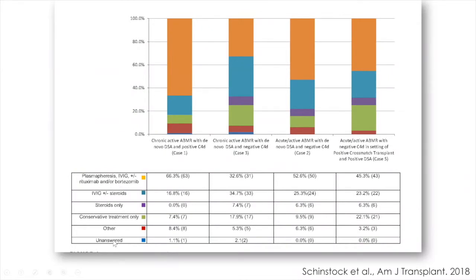These diagnoses also demonstrated implications with regards to choice of therapy. The treatment approaches were heterogeneous but largely linked to the assigned diagnosis. When acute or active antibody-mediated rejection was diagnosed by the clinician, treatment was recommended 95.3% of the time, whereas only 77.7% of the time was treatment recommended in the context of chronic lesions. The survey allows us to conclude that the Banff antibody-mediated rejection classification is vulnerable to misinterpretation, and this may have implications in the context of patient management.